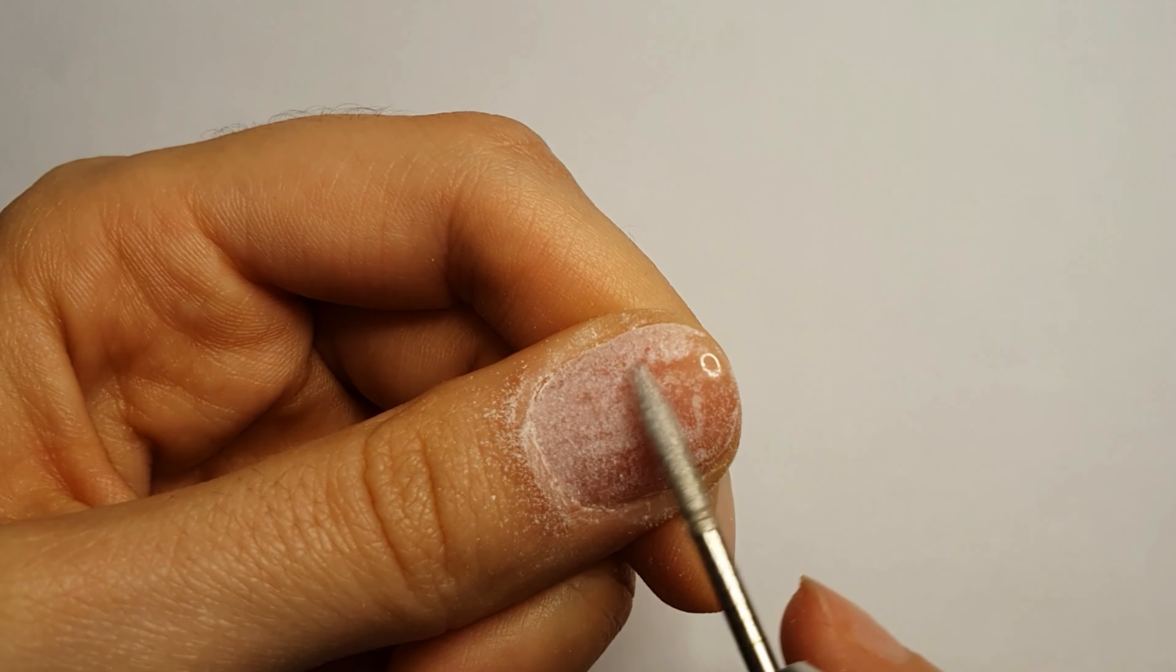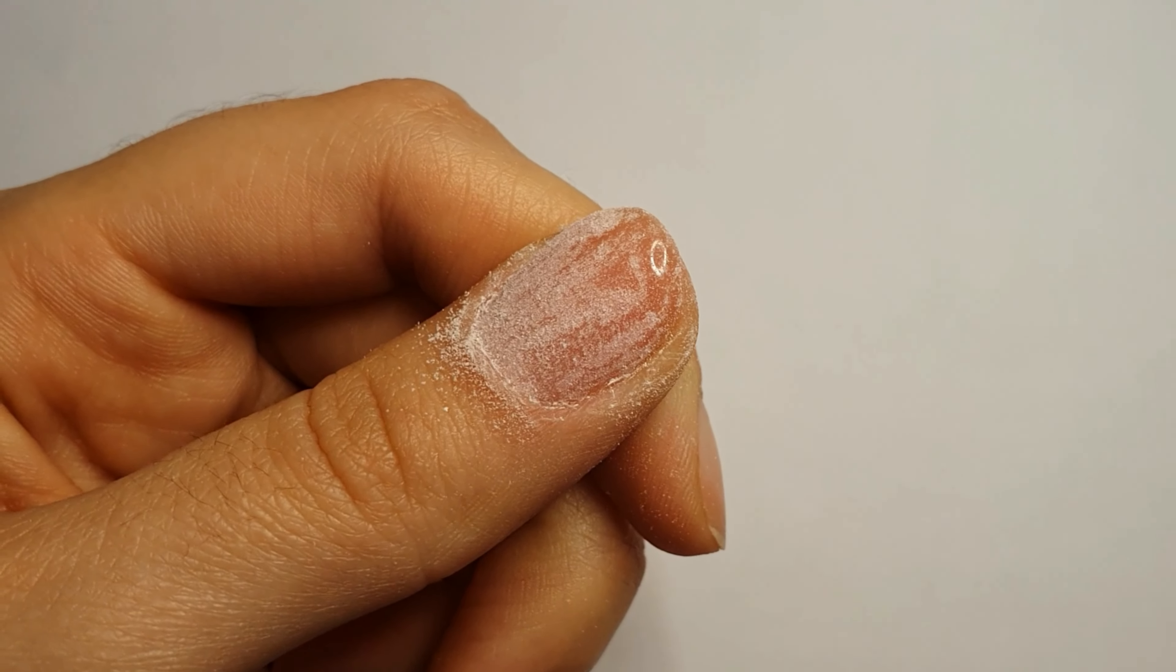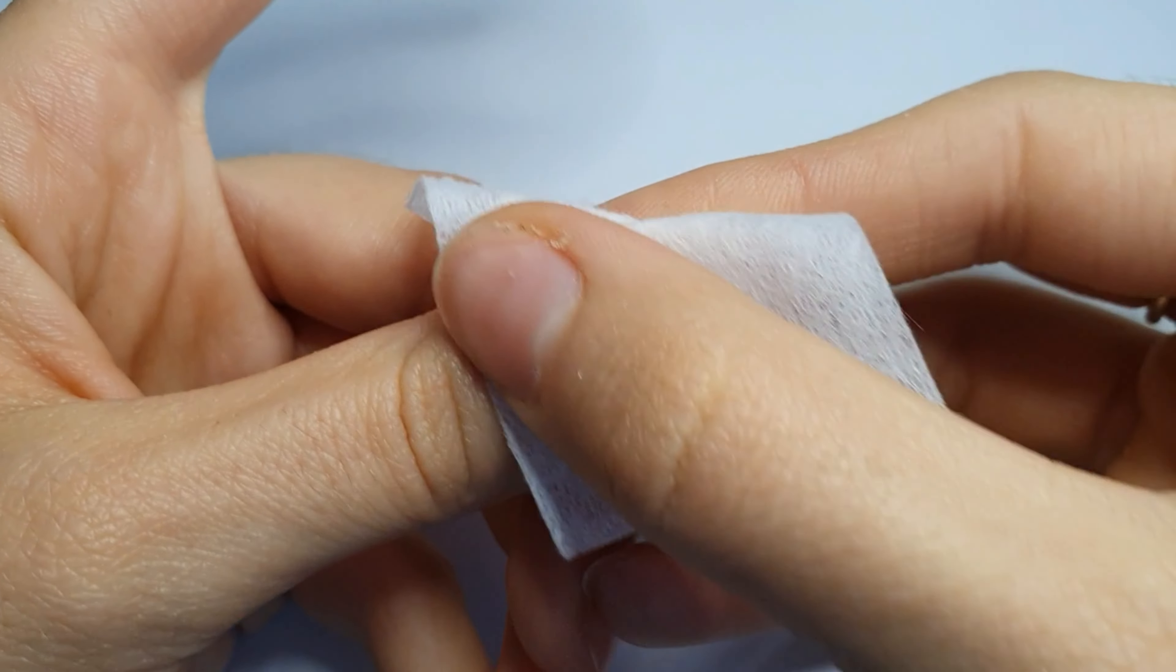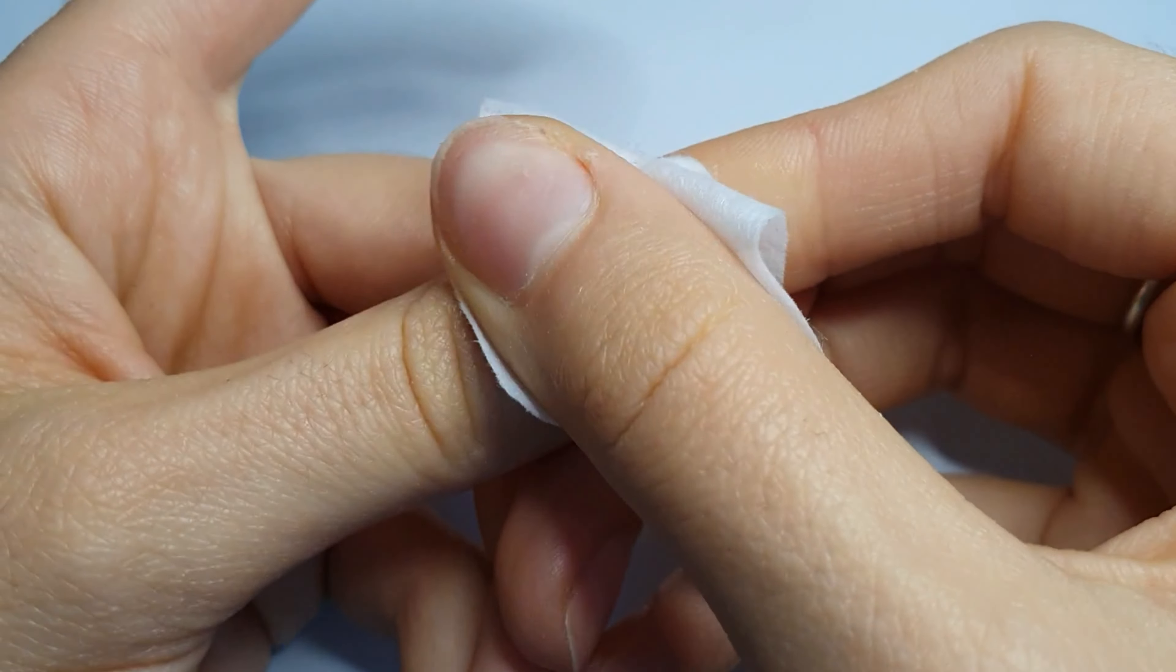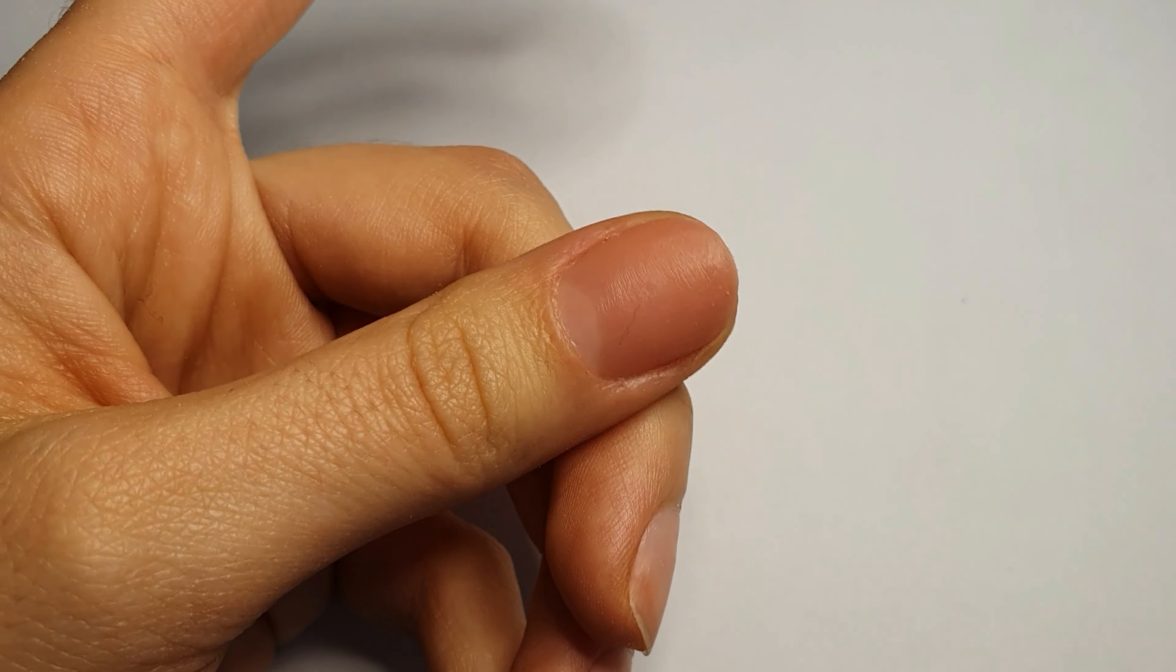I'm going to skip this part because it just continues filing like this. Now I'm going to use the nail cleanser again to clean the nail. This is how the nail looks after the filing. It is very good, looks very natural, and it's very even.